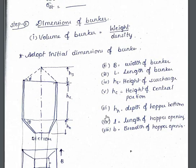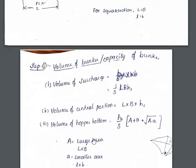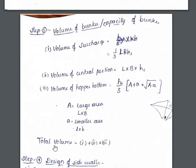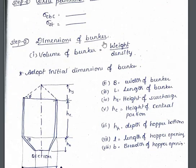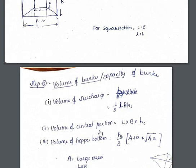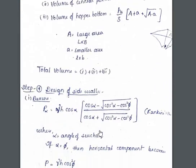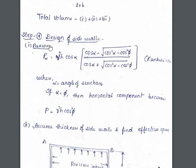We have to check this total volume against the required volume, which is weight divided by density. If the provided volume is greater than the required volume, it is acceptable. If not, we have to change the assumed dimensions.